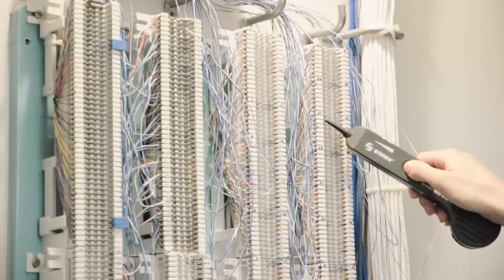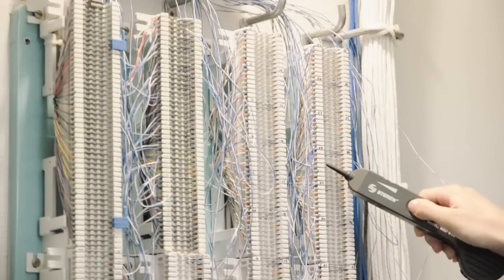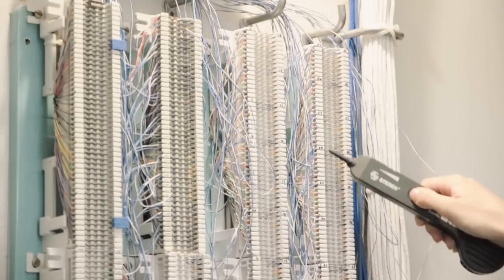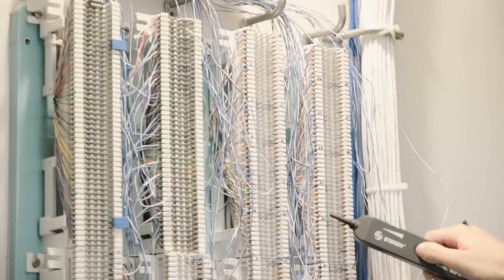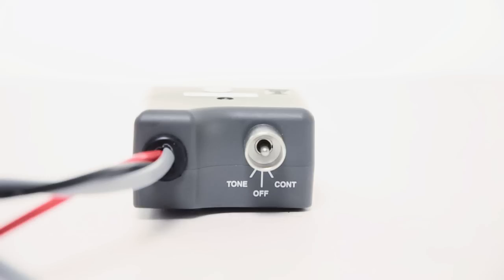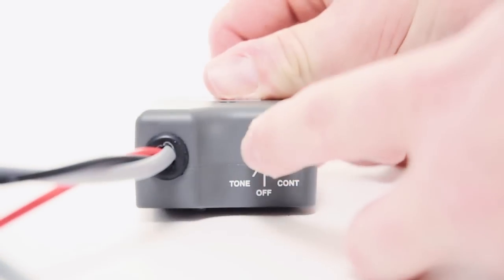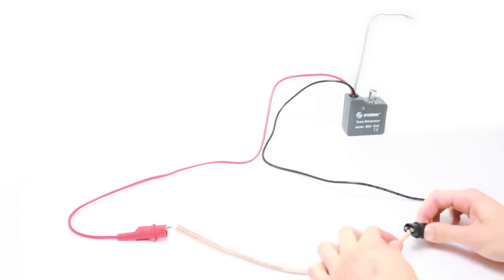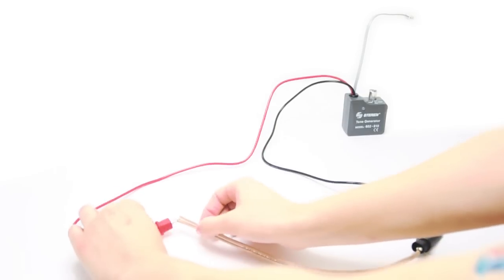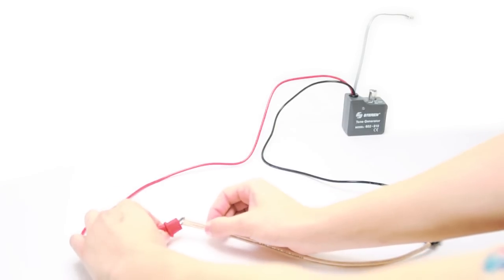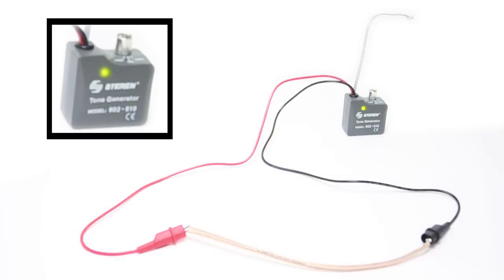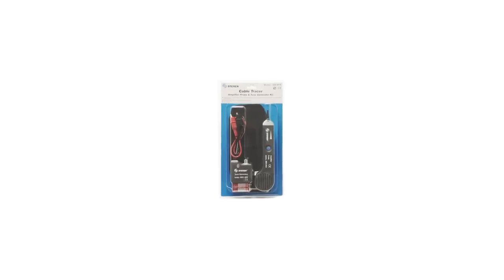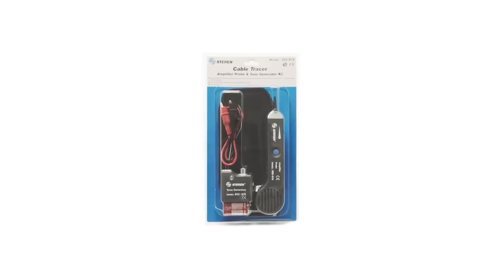Although the probe may make noise when touching other cables, the sound will be loudest when closest to the correct cable. Another usage for the tone test set is continuity. When switched to continuity, connect the alligator test leads to the subject pair. A green light located on the tone generator will shine to confirm continuity.